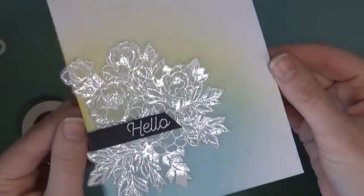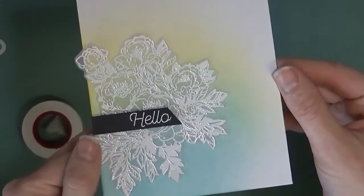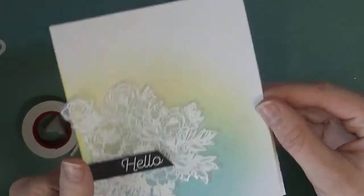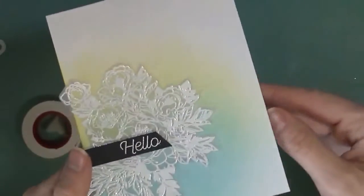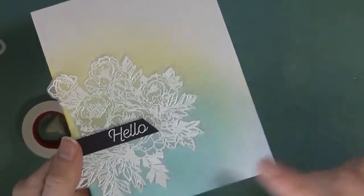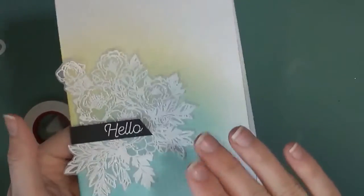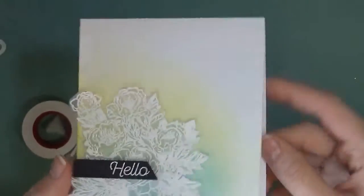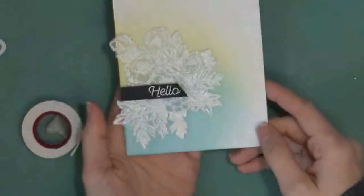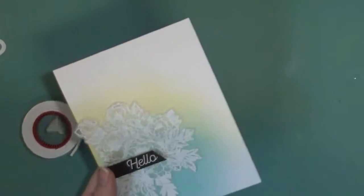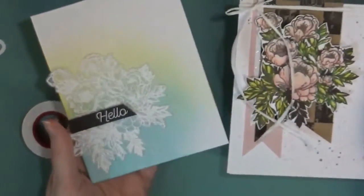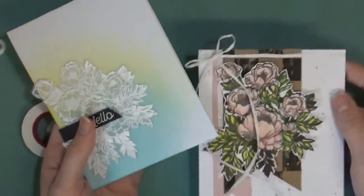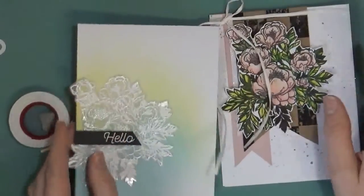And that is the card for today, very clean and simple, but I think this stamped image, especially on the vellum and embossed in white with some color behind it, really stands out. And then just having a simple sentiment on a little bit of black card stock just helps those colors pop. So I hope you enjoyed this video, gave you some ideas of what to do with this stamp set—stamp it on vellum, stamp it and color it, watercolor it. There's a lot of things you can do.